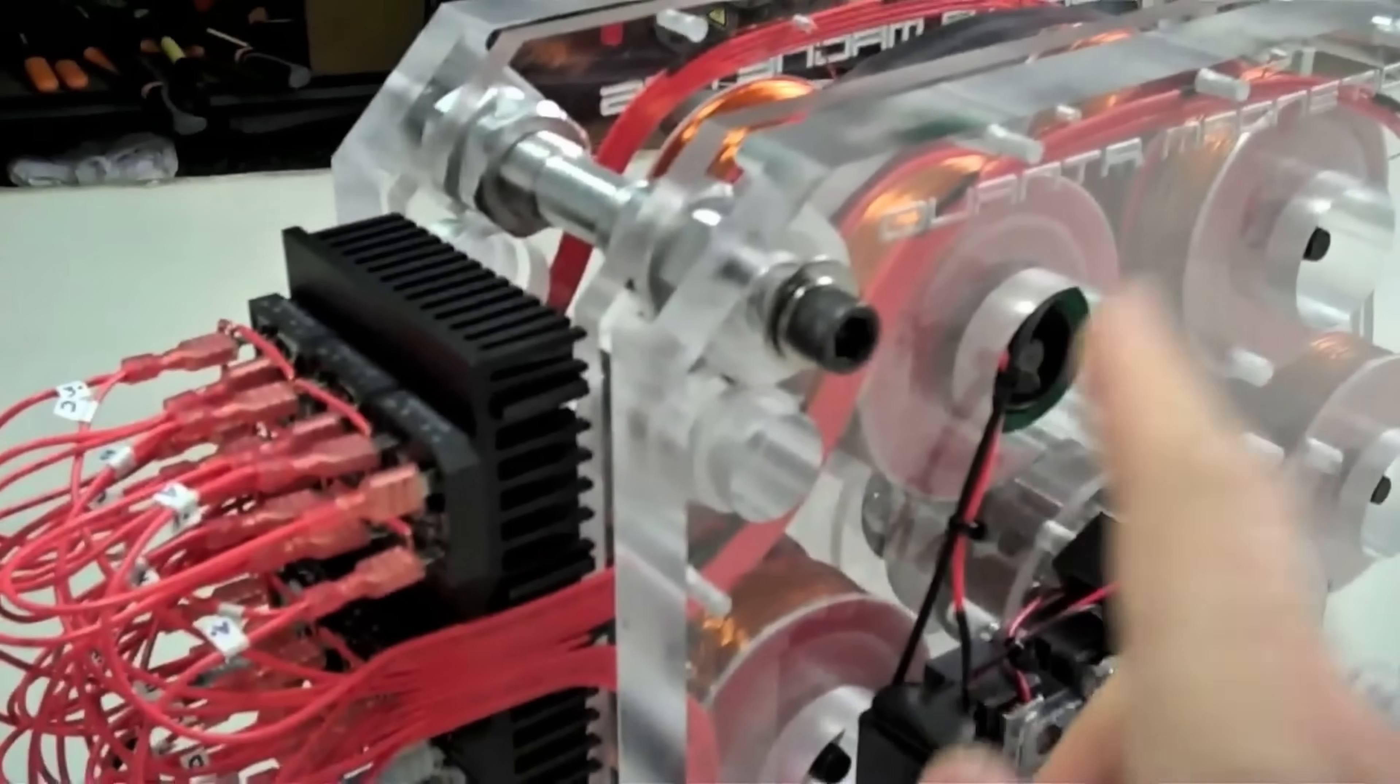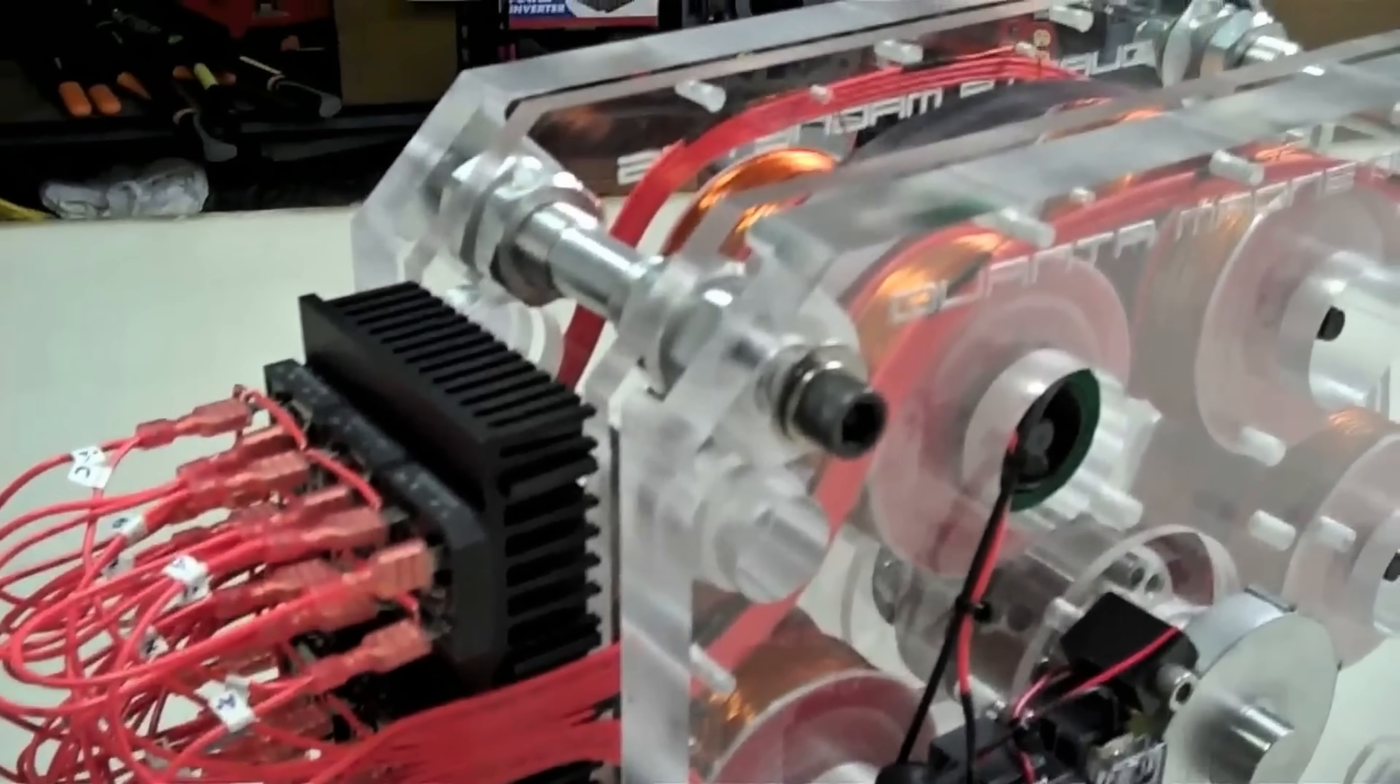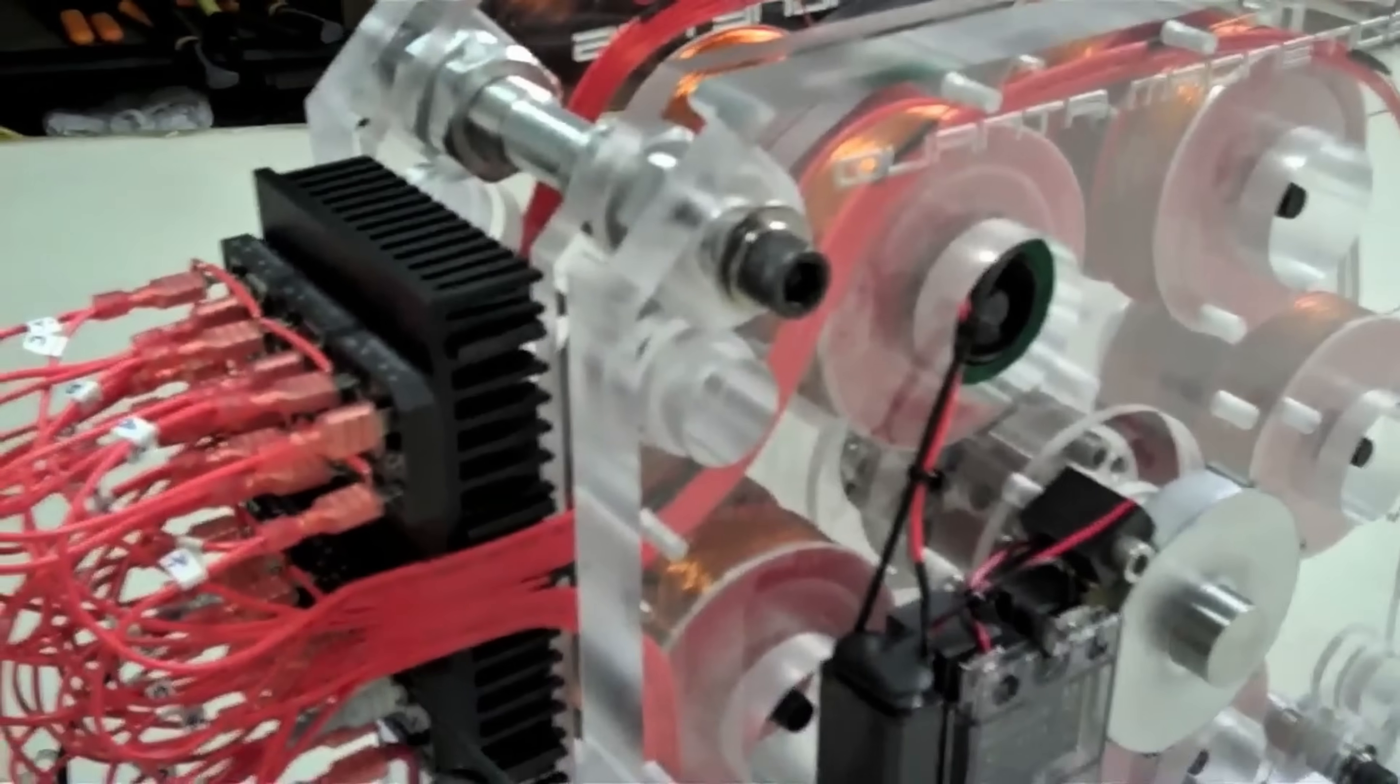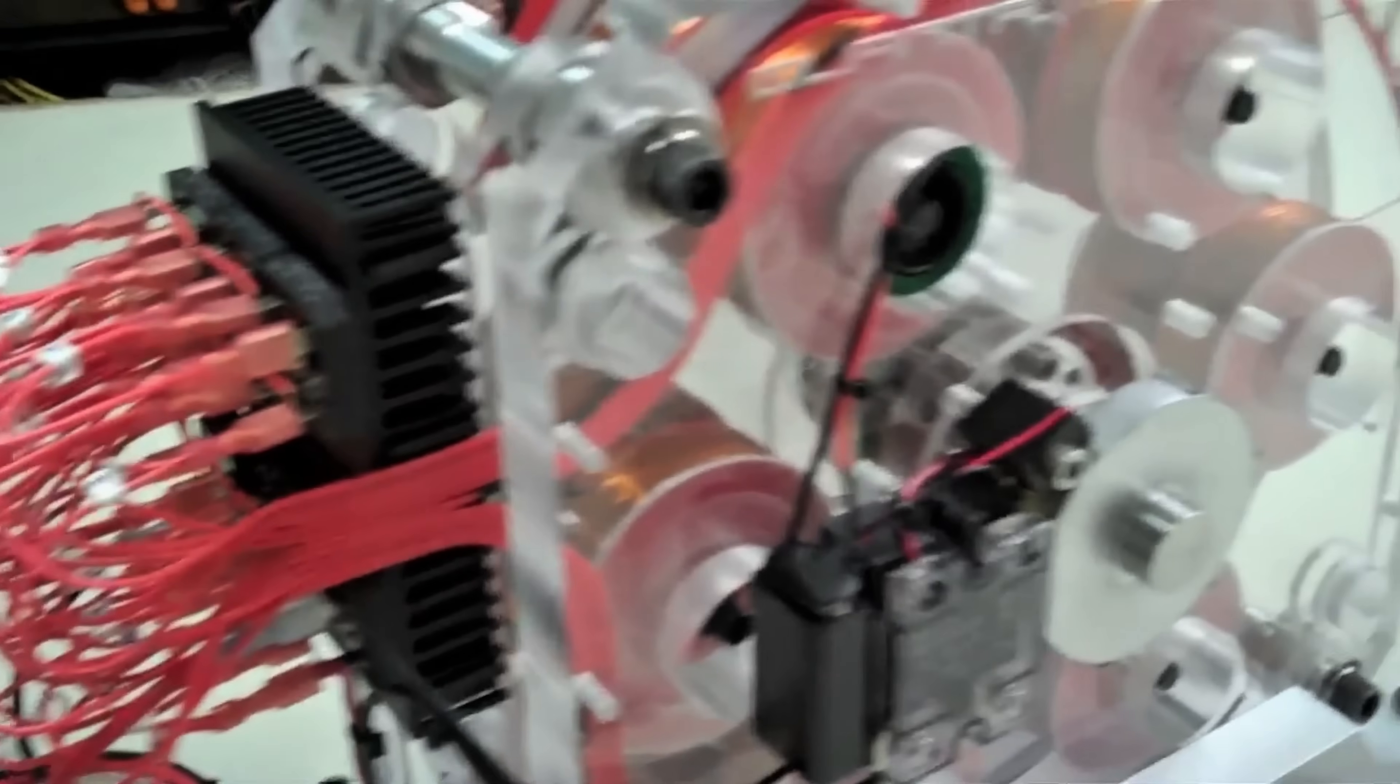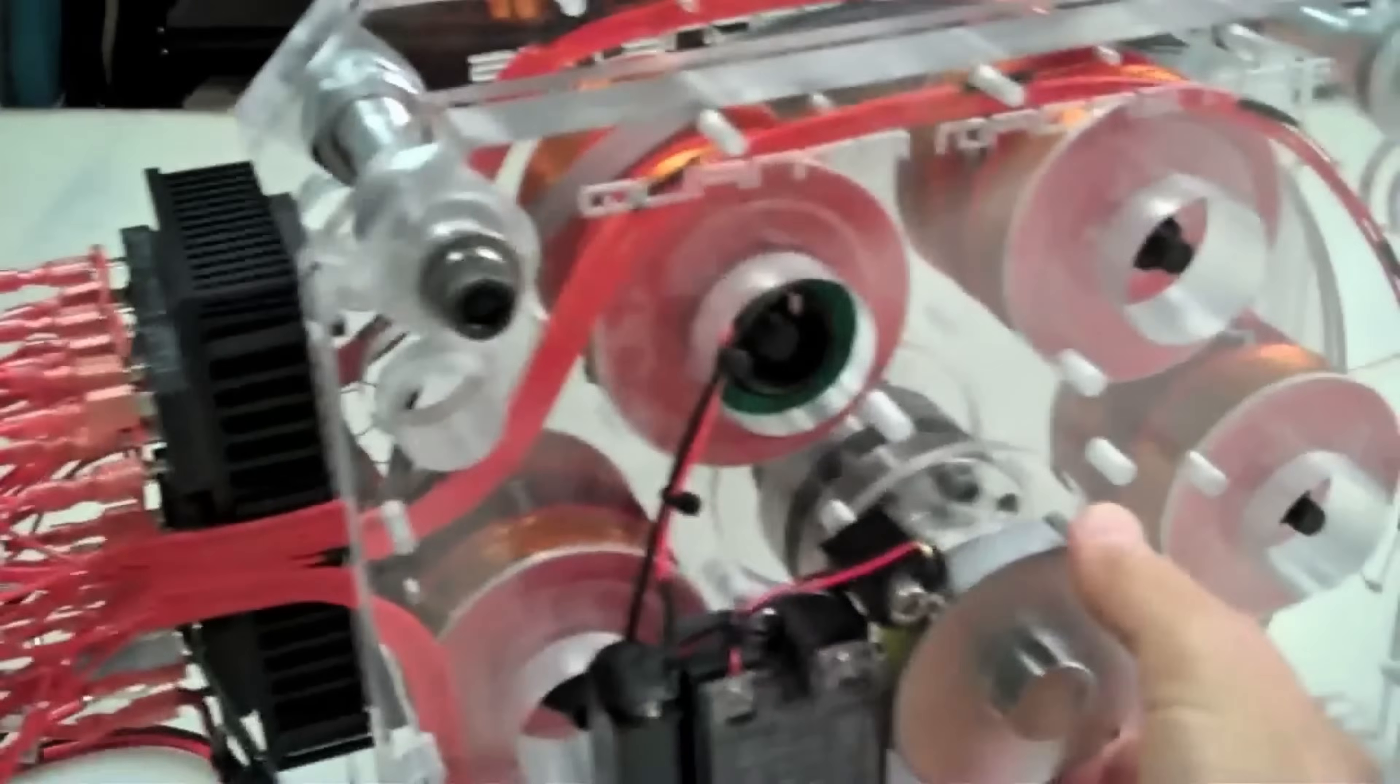One way to think about it, the pulse motor only fights the flywheel for part of each spin, and for the rest, it's relaxing and letting the flywheel carry its own speed. This further contributes to making the device highly efficient for its input, since the pulses are sharp and the rest of the rotation is essentially unloaded.